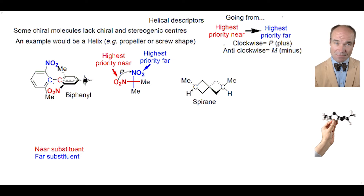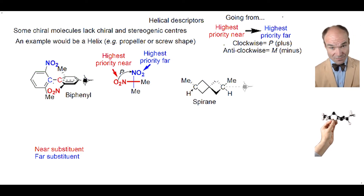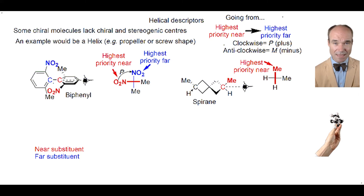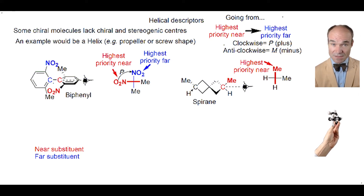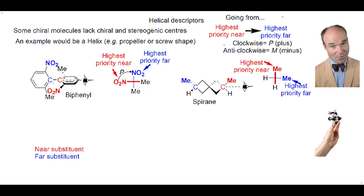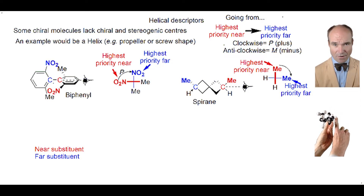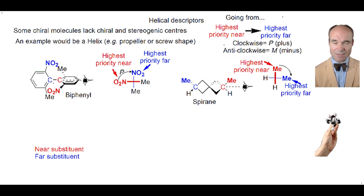This is spirane. If we view the molecule from this perspective, of the nearest substituents, the methyl group is a higher priority than the hydrogen. And of the farther substituents, again the methyl group is of a higher priority than the hydrogen. If we imagine going from the nearer higher priority to the farther higher priority, the movement is clockwise — plus, or P.